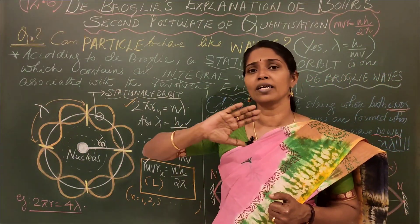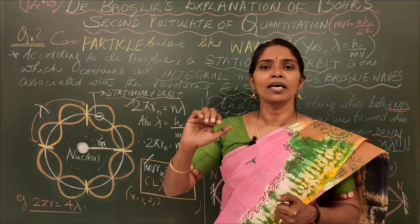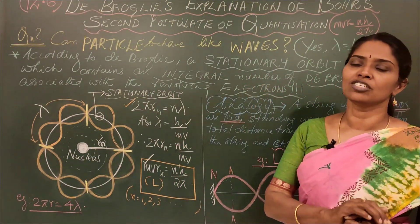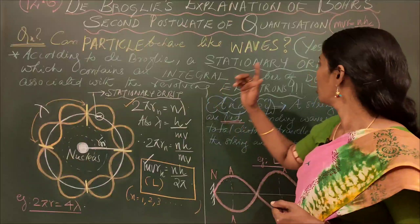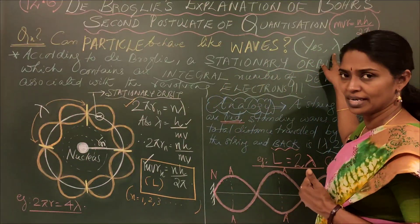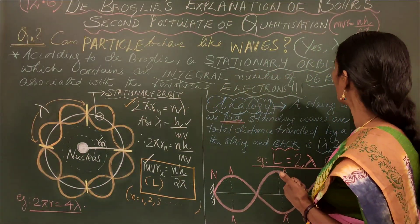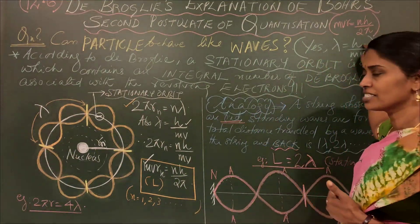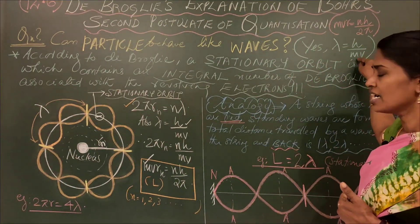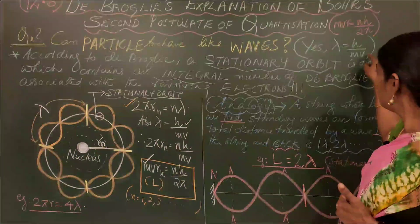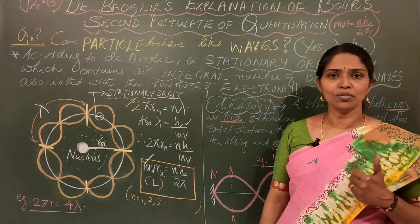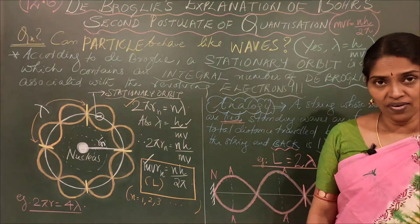De Broglie explained crystal clear: if it is a wave, definitely it should have a wavelength. De Broglie wavelength estimated as lambda = h/mv, where h is Planck's constant, m is mass of the electron revolving, v is the velocity with which it is revolving. So that was known as de Broglie wavelength.